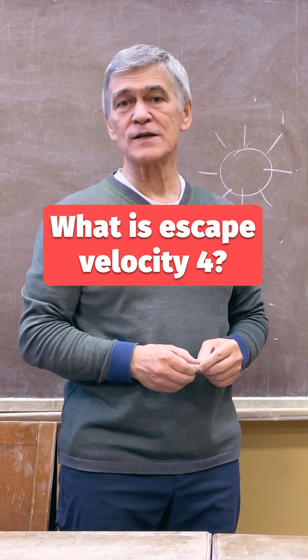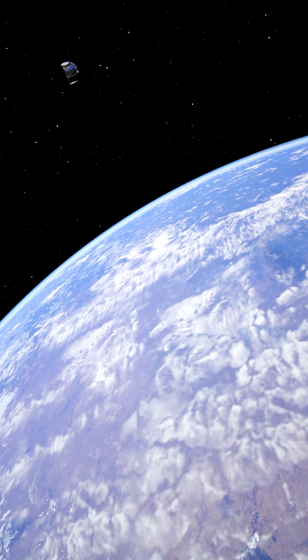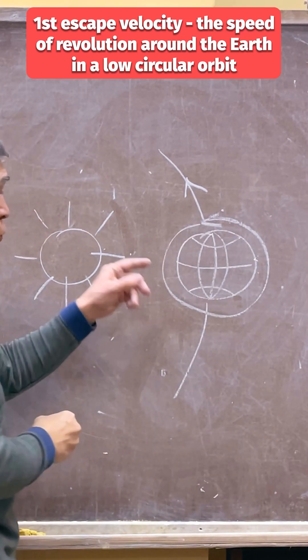What is the fourth cosmic velocity? We refer to the initial cosmic velocity for Earth as the one that allows you to orbit our planet in a low orbit.